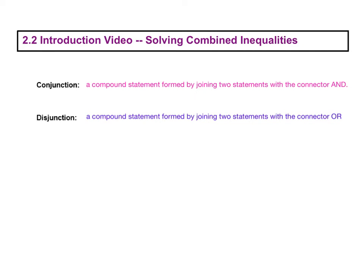All right, so lesson 2.2. We have a little bit of vocab for you guys to write in. We're talking about combined inequalities. So if you take simple inequalities and you combine them, you're going to have a conjunction or a disjunction.